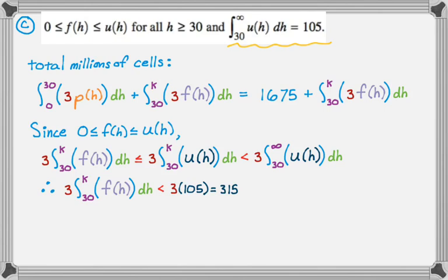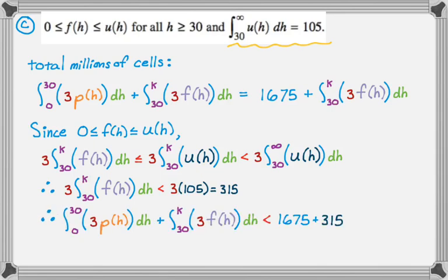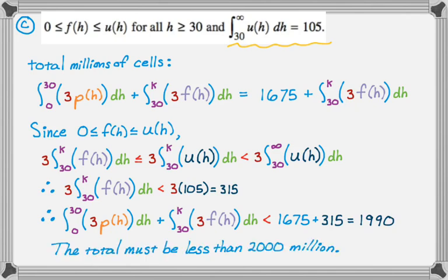And then, so we said that, therefore, the integral from zero to 30 plus the integral from 30 to K must be less than 1675 plus 315, because 315 is definitely bigger than the integral from 30 to K of 3F of H dH. So since that number is 1990, the total must be less than 2,000 million. These units are really annoying.